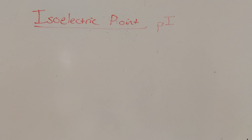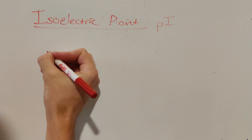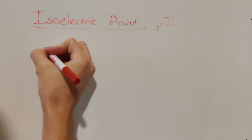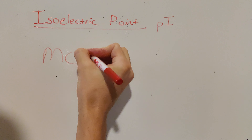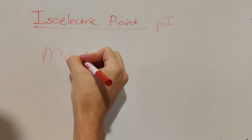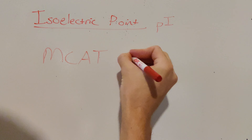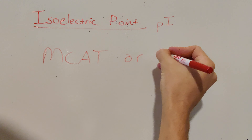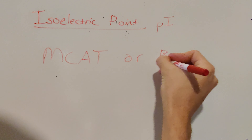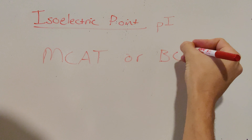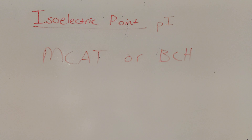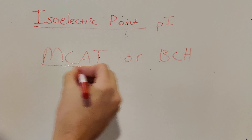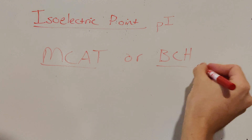So why might you want to calculate the isoelectric point of an amino acid? There are really two reasons. Number one, when you're taking your MCAT, the isoelectric point is going to come up, and you want to be able to easily and quickly answer those questions. Your biochemistry classes during your undergraduate are also going to require you to calculate the isoelectric point.